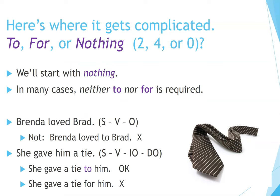Here's where it gets complicated: to, for, or nothing. We'll start with 'nothing.' In many cases, neither 'to' nor 'for' is required. For example: 'Brenda loved Brad' — subject, verb, object. Not 'Brenda loved to Brad.' Also: 'She gave him a tie' — subject, verb, indirect object, direct object. We can also say 'She gave a tie to him,' but not 'She gave a tie for him.'